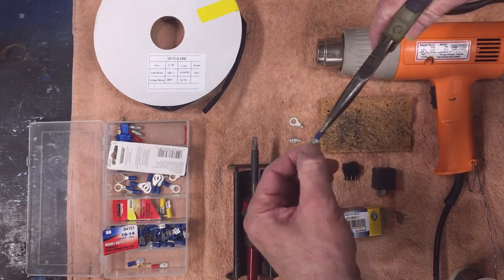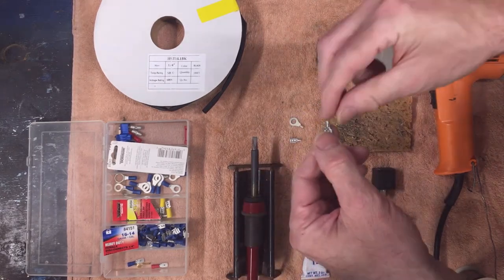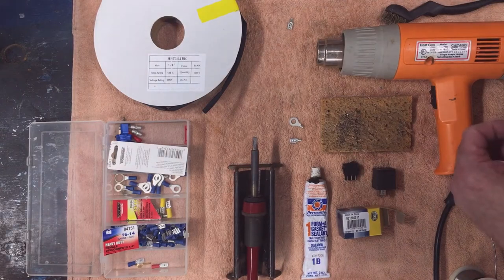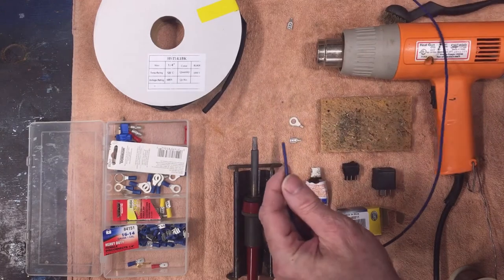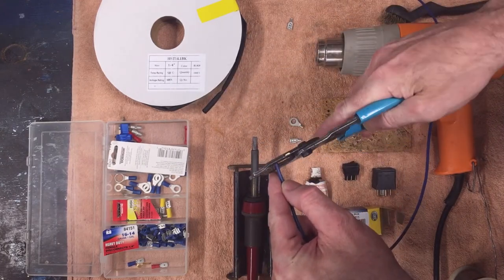So what I do is I take the insulation off and I use it as a solder connection. It's a 14 gauge wire. You strip it like you would just to do a crimp-on.